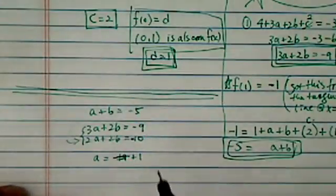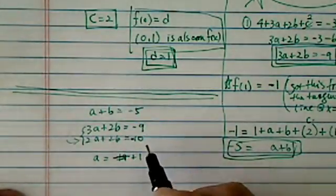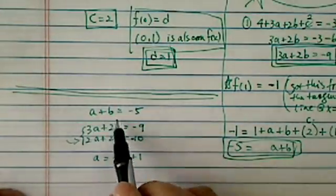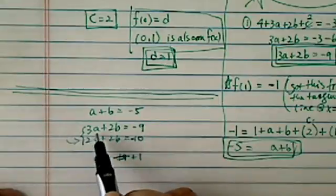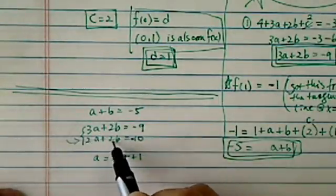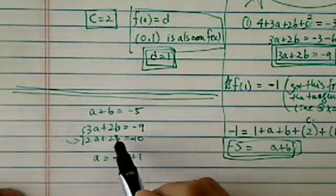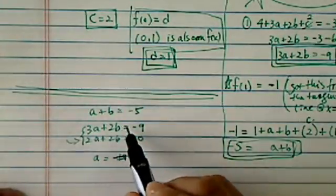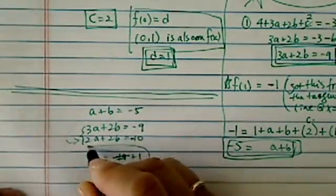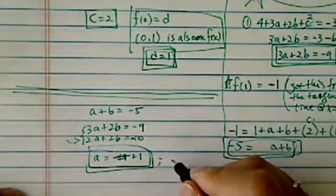So subtracting them, I have a. Let me verify: a plus b equals -5, 3a plus 2b equals -9. Times 2: 2a plus 2b equals -10. Subtracting this one, I have a. This minus this gives a equals plus 1.